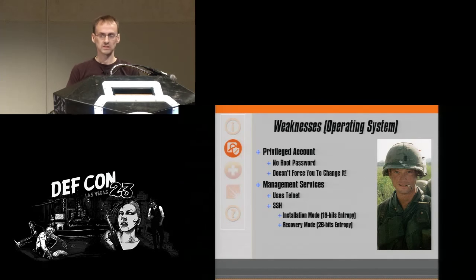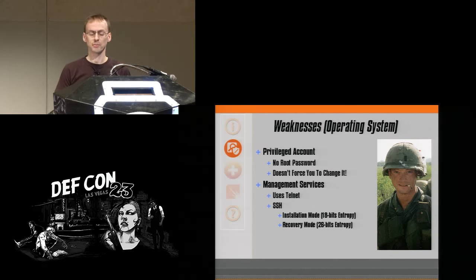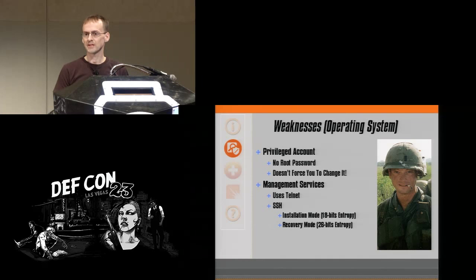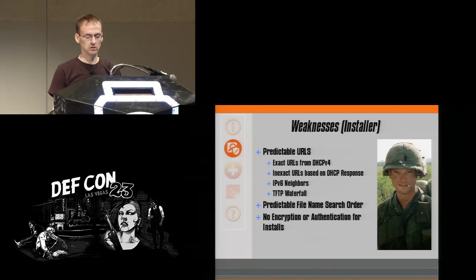So white box Ethernet: the blank slate, and ONIE the bootloader — what could go wrong? There are a number of weaknesses in the operating system. ONIE itself is Linux based. The root account has no password, and ONIE does not force you to change the password, so it's likely to remain stale. Management services use Telnet — insecure by design, ultimately weak. SSH is weak too: in installation mode the key has only 18 bits of entropy, and cover mode has 26 bits of entropy. Not looking good so far.